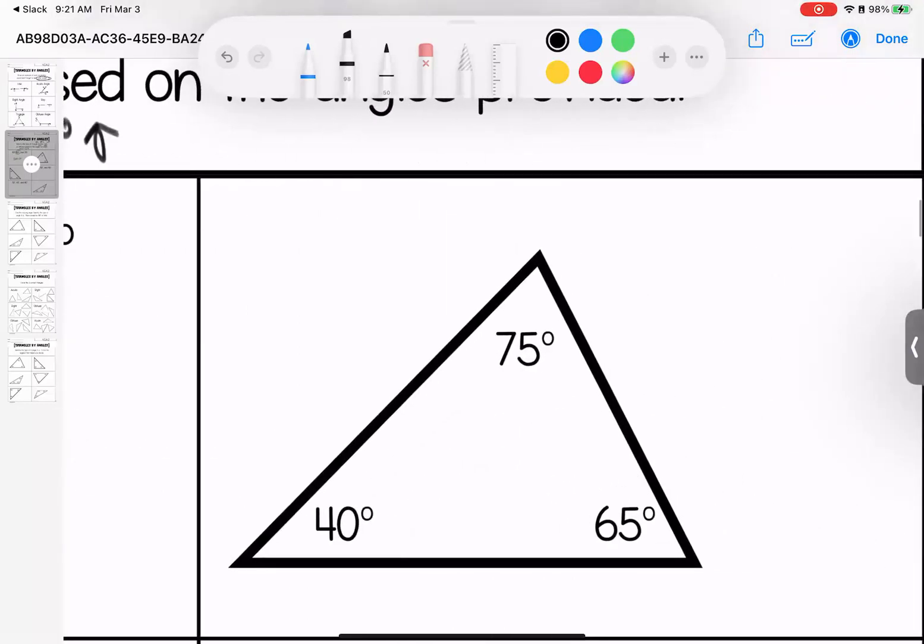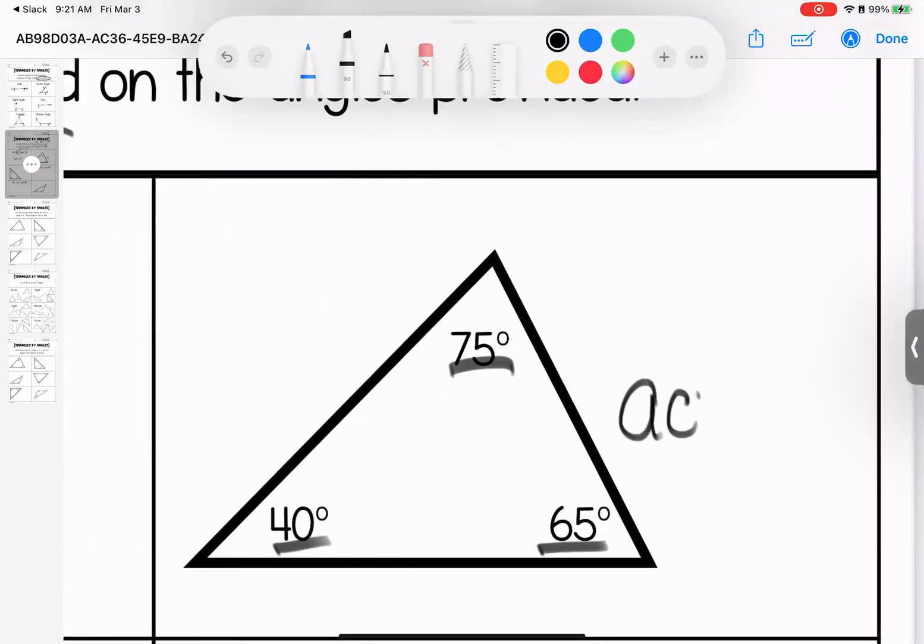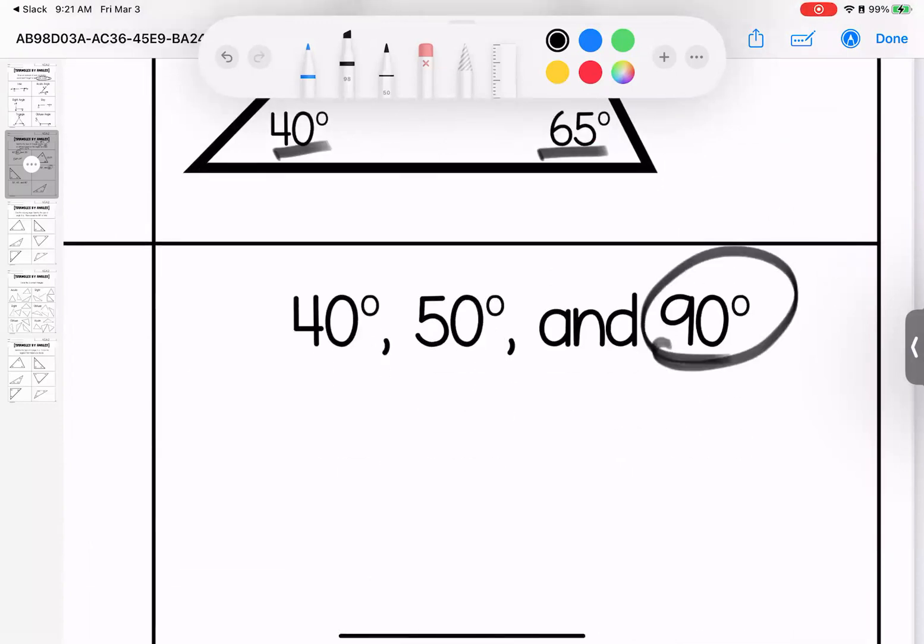Over here, we have 75, 40, and 65. They are all less than 89, so this is acute. Over here, as soon as I see this 90-degree angle, I don't have to look any further. This is a right triangle.